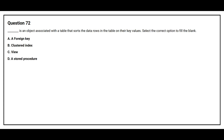Question number 72. Blank space is an object associated with the table that sorts the data rows in the table on key values. Select the correct option to fill the blank. Option A: A foreign key. Option B: Clustered index. Option C: View. Option D: A stored procedure.